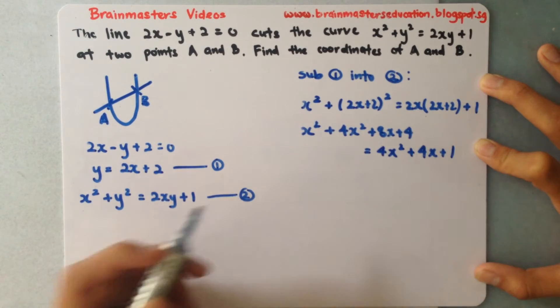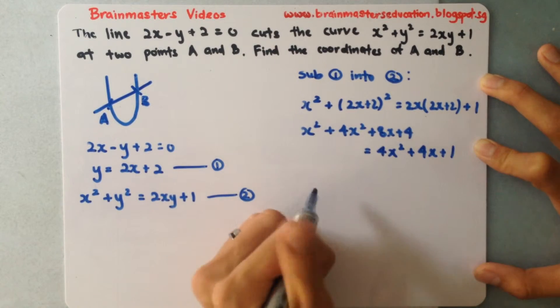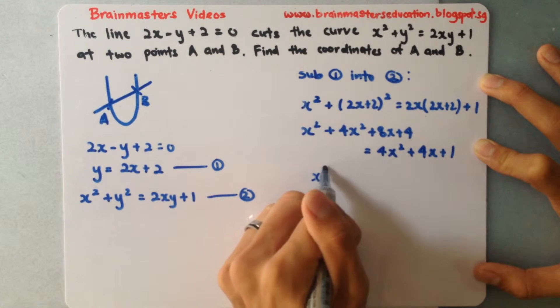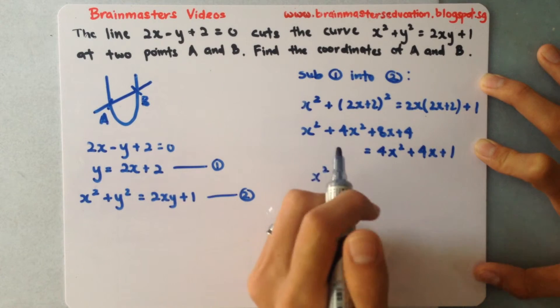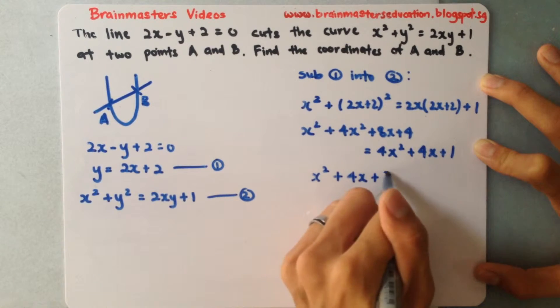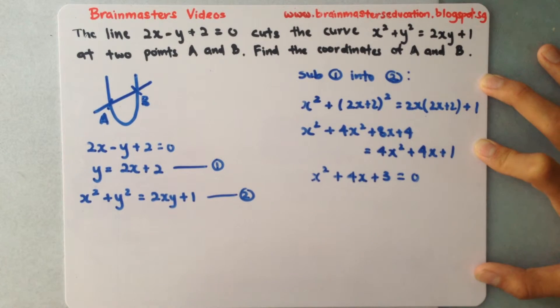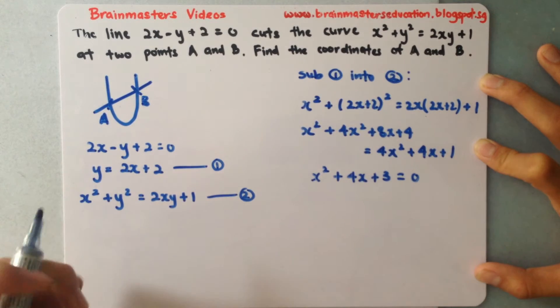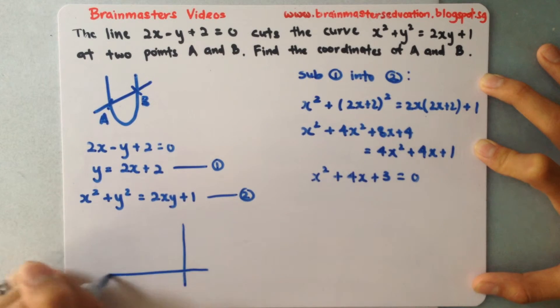Okay so I'll bring everything over to one side to set it equals to 0. So by simplifying, okay so I'll have. Okay so at this stage I will have to do my factorizing. Okay so once I've factorized using this method, my trial and error method.